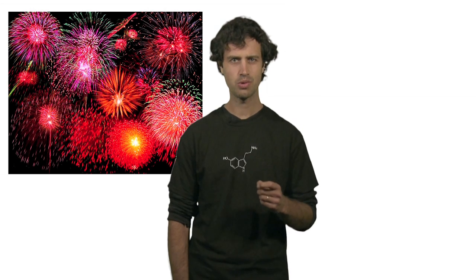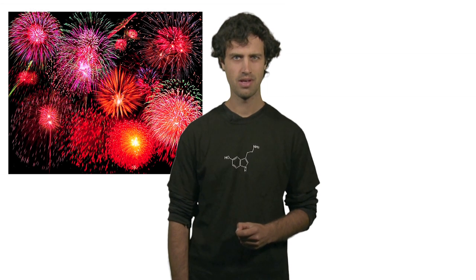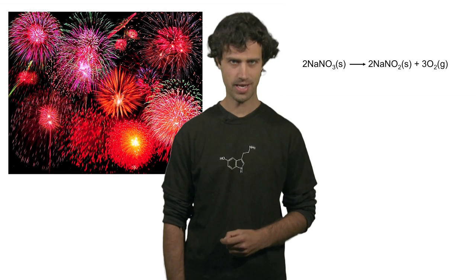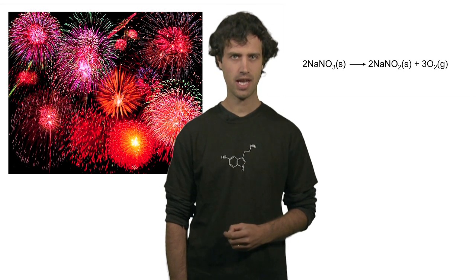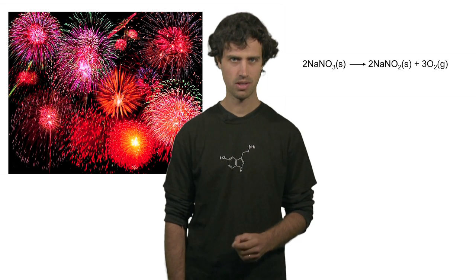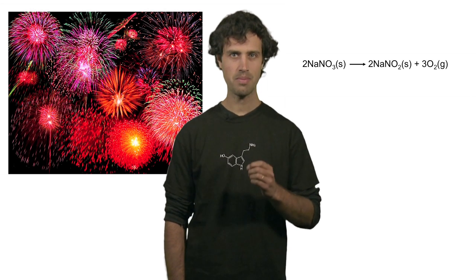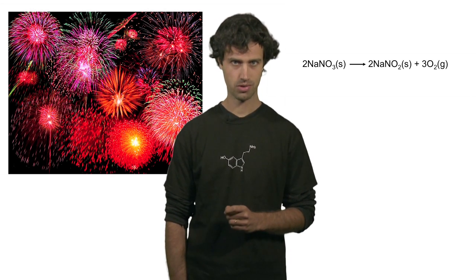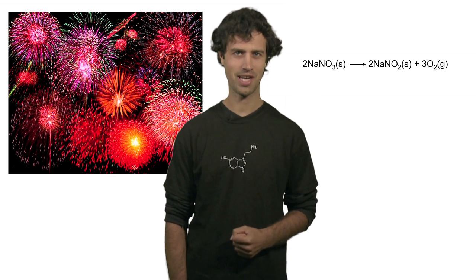Fireworks often work in two steps. In the first step, heat and oxygen molecules are being produced. This can be accomplished, for instance, with sodium nitrate. It is an oxidizing agent that, upon heating, produces sodium nitrite and oxygen molecules, while emitting yellow light.